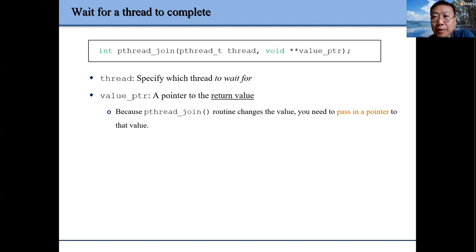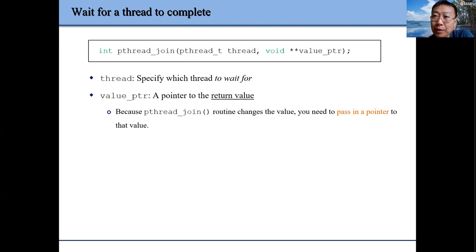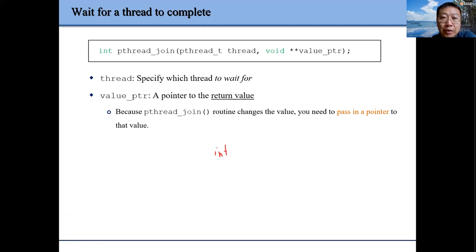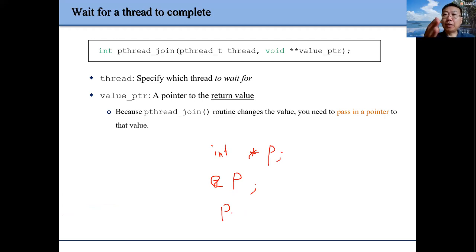Generally speaking in C, when we work with pointers, you only need to remember two issues. Either we handle the value stored in this pointer, or we handle the address of this pointer. For example, if we have an integer pointer p, &p is for p's address, and *p is for the value stored at p. That's it.